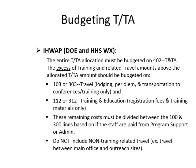For the weatherization grants, DOE and HHS, the entire TNTA allocation must be budgeted on the 402 line. Any excess of training and related travel amounts above the allocated TNTA should be budgeted on the appropriate budget category. For example, if there is travel that cannot be accommodated by the allocation in TNTA, that should be budgeted on line 103 or 303 — that would include lodging, per diem, and transportation for conferences and training only. For training and education costs that can't be accommodated by the TNTA line, those should be budgeted in line 112 or 312, which includes registration fees and training materials only. These remaining costs must be divided between the 100 and 300 line items based on whether the staff are paid from program support or admin.